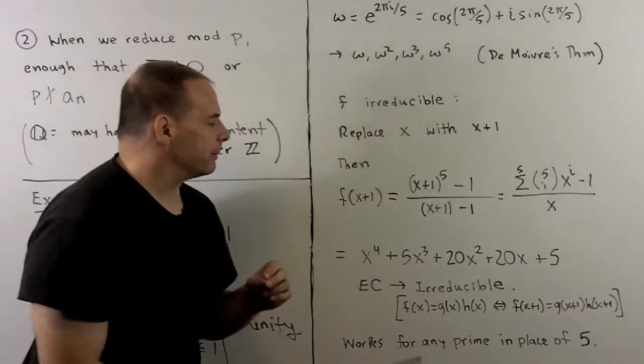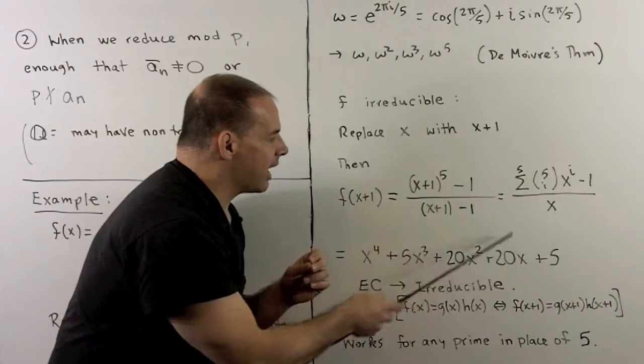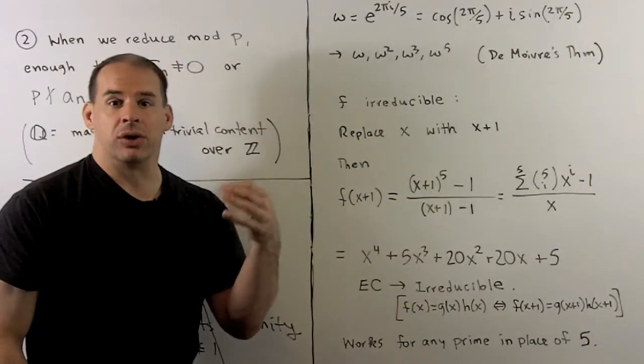5 divides all but the lead coefficient. 5² does not divide the constant term. So by Eisenstein, this is irreducible.